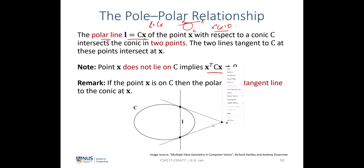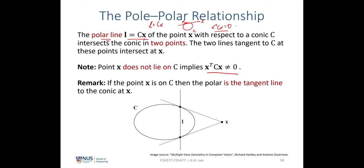Geometrically, suppose we have a point x. The polar line l passes through two tangent points, where each tangent point is the result of a tangent line passing through that point and x. The line spanned by these two tangent points is given by C·x, and we call it the polar line. The remark is that if point x is on C, then x^T·C·x = 0 and the polar line becomes the tangent line.